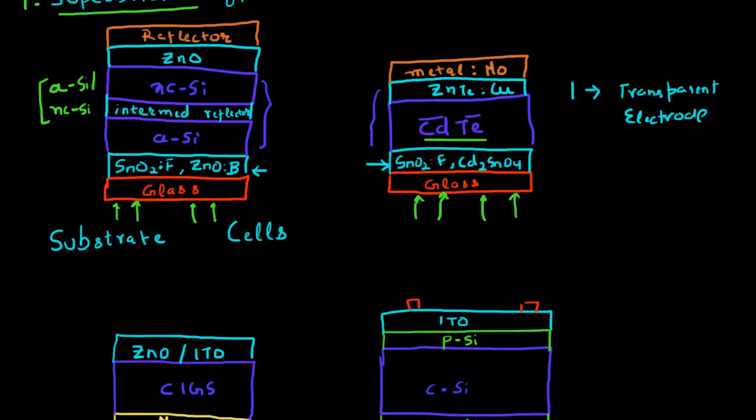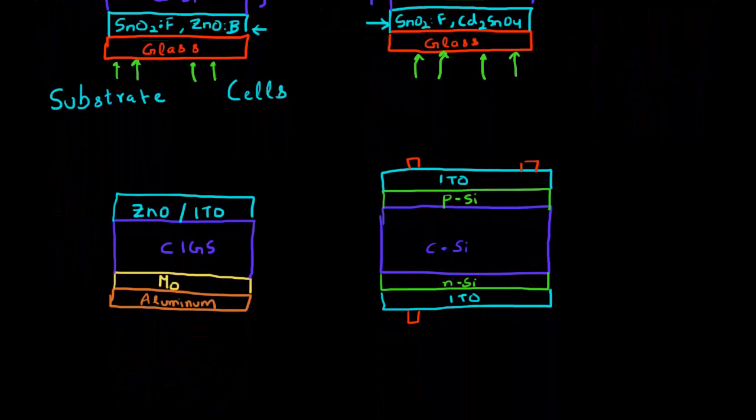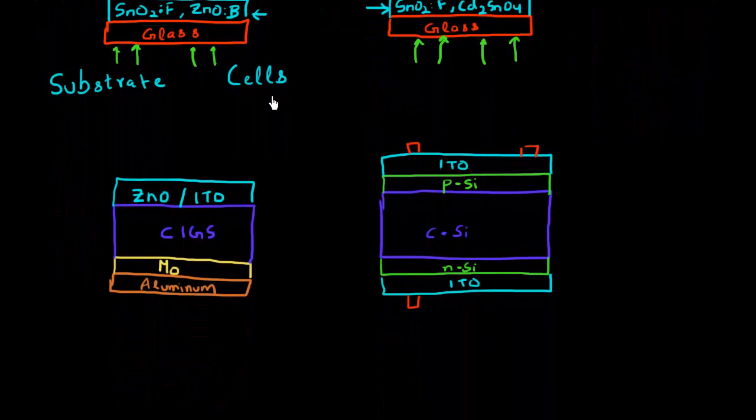The other cell configuration is the substrate kind of cell configuration. In this kind of cell configuration, you first deposit the substrate. For example, this substrate based cell is often used for making CIGS based solar cells.